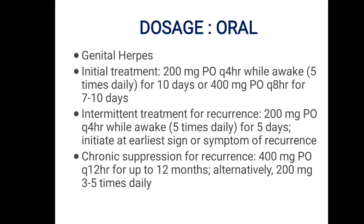Alternatively, 400 mg per oral every 8 hours for 7 to 10 days. Intermediate treatment for recurrence: 200 mg per oral every 4 hours while awake for 5 days — initiate at the earliest sign or symptoms of recurrence. Chronic suppression for frequent recurrence: 400 mg per oral every 12 hours for up to 12 months.